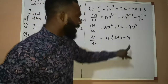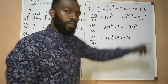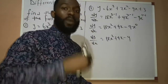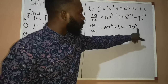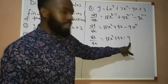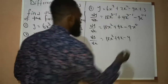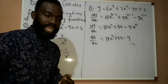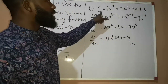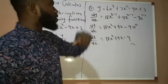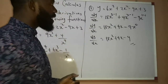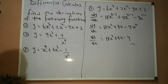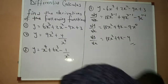Now how did we get 9 here? Because x raised to the power of 0 is 1. In laws of indices, when a base is raised to the power of 0, the answer is 1. So if x raised to the power of 0 is 1, it means we have 9 times 1 which is 9. So 18x squared plus 4x minus 9 is the answer when we find the derivation of y equal to 6x cubed plus 2x squared minus 9x plus 3. That is question number 1. Now let us attend question number 2.